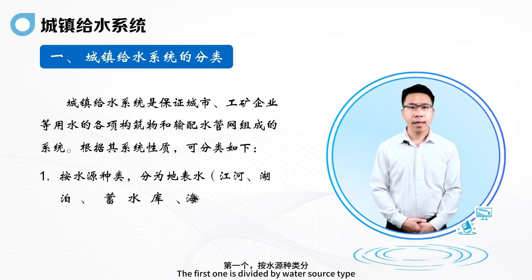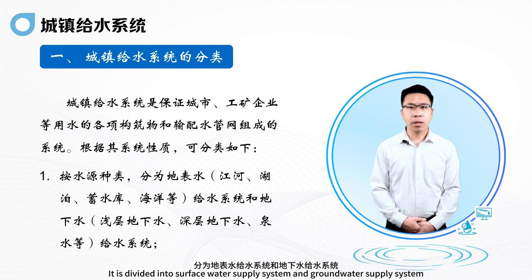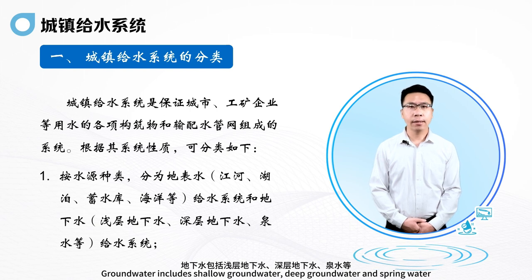The first classification is by water source type, divided into surface water supply system and groundwater supply system. Surface water includes rivers, lakes, reservoirs and oceans. Groundwater includes shallow groundwater, deep groundwater and spring water.